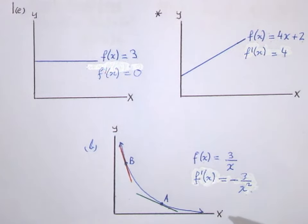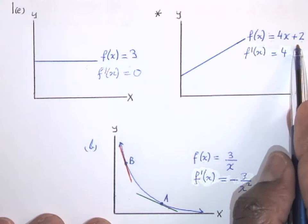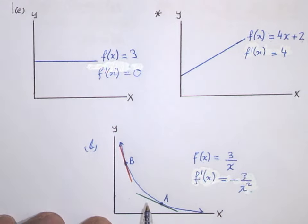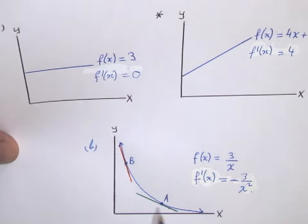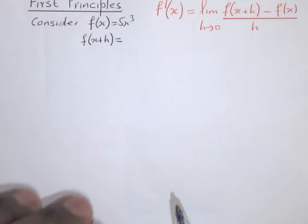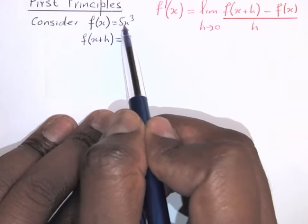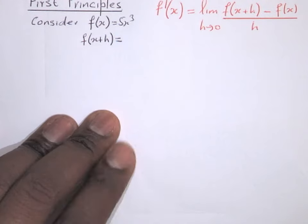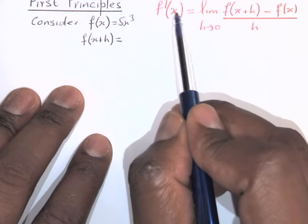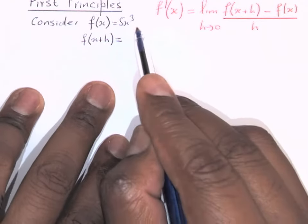Now we should look at an easier way of getting answers to questions like these, because those simple ones are easy to find from grade 9. Before we get to the rules, let's look at this example one more time. We are given f(x) equals 5x cubed, and we've got to find the derivative — meaning we've got to find f'(x), meaning we've got to find the gradient.